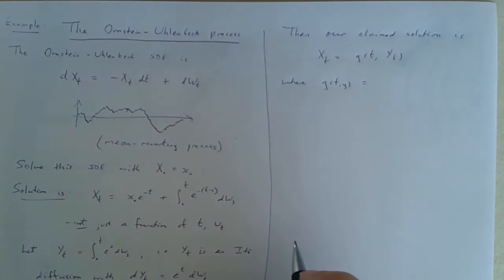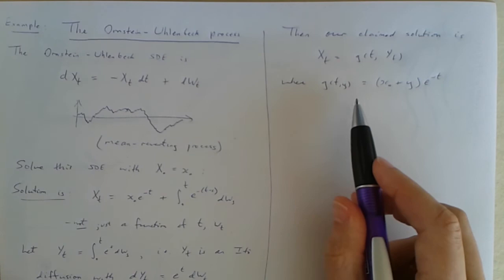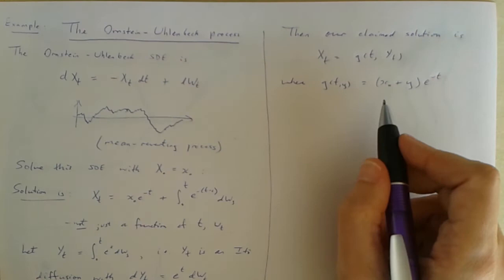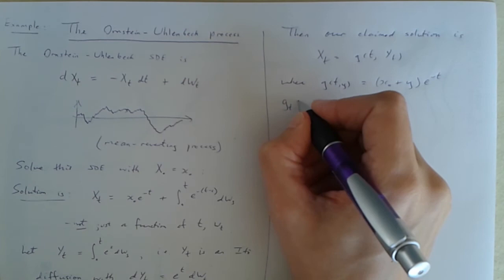It can be written like this where the g actually is just a function. To make it fit, g of ty would have to be... okay so if you take that function and you plug in for y this expression then you get what we claimed the solution was. So this is something to which Ito's lemma applies. g really is just a function, so we can go with that.